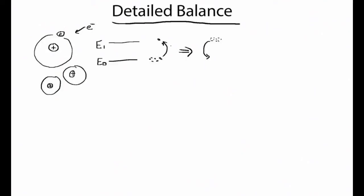Let's talk about the probabilities of going there. P01 is the probability of transitioning in a collision from the ground state to the excited state, and P10 is the reverse — the probability of transitioning through a collision from the excited state into the ground state.